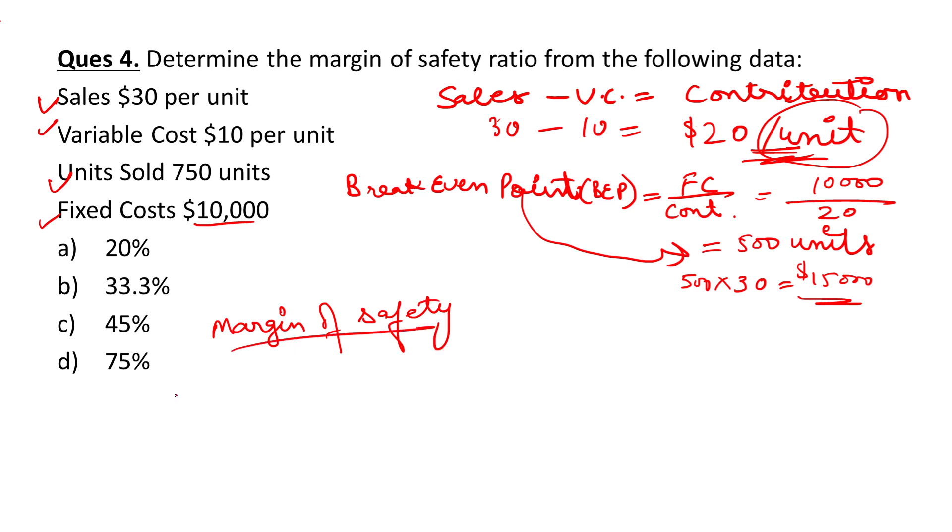The simple formula to calculate margin of safety is actual sales minus break-even point divided by actual sales. What is the actual sales? 750 units multiplied by $30 per unit.